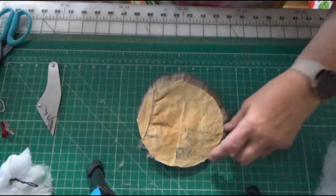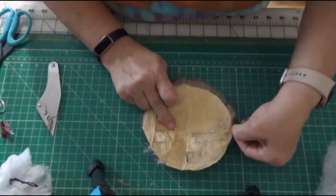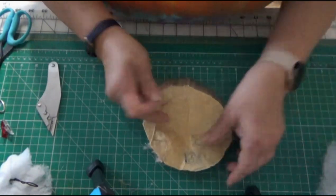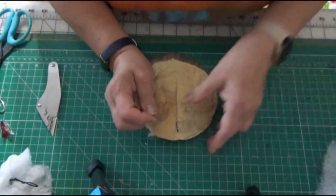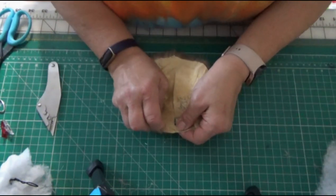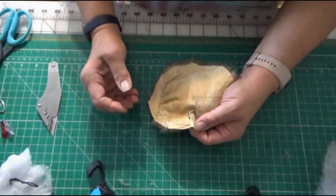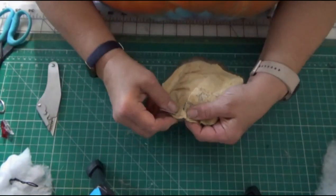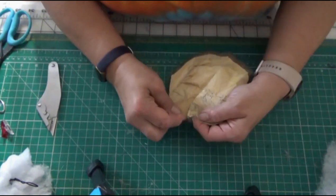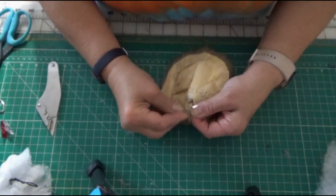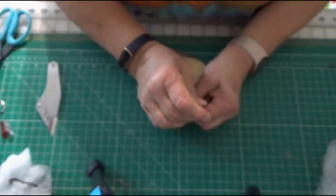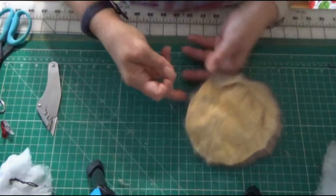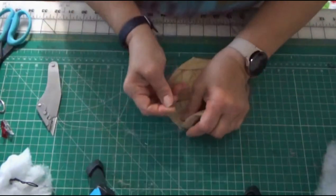So I am going to take my first stitch. I am going to stitch about an eighth to a quarter of an inch around the edge. I am just going to go in and out of the fur and pull it out.